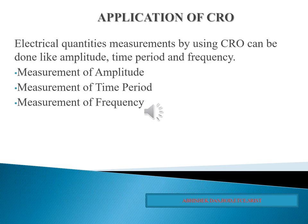After construction, we need to know the applications of the CRO. Electrical quantities measured by the CRO include amplitude, time period, and frequency measurement. The CRO is used to measure amplitude, time period, frequency, and phase difference. From the CRO, we cannot measure frequency directly — we need to first calculate the time period, and from the time period we can then calculate the frequency.